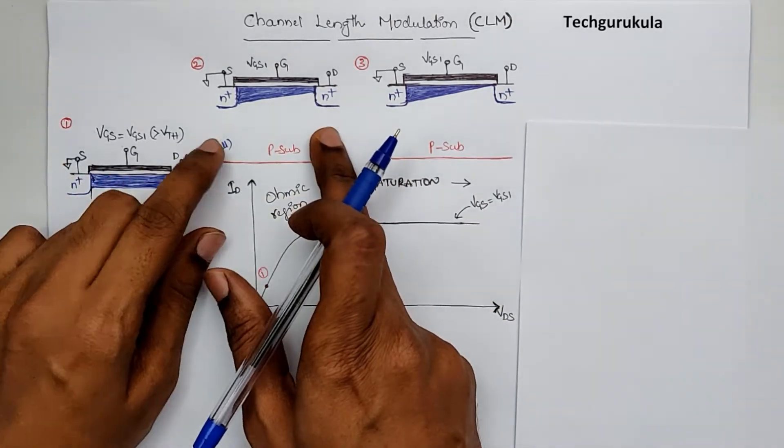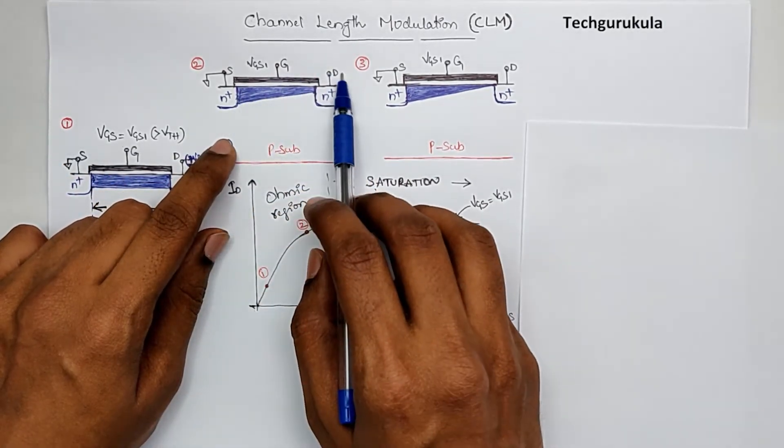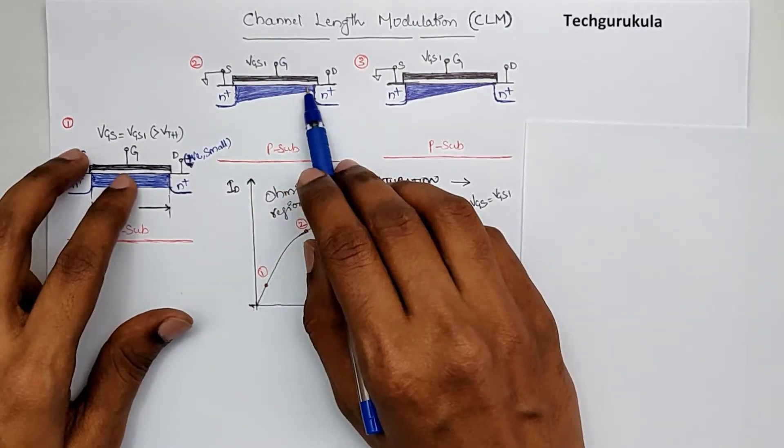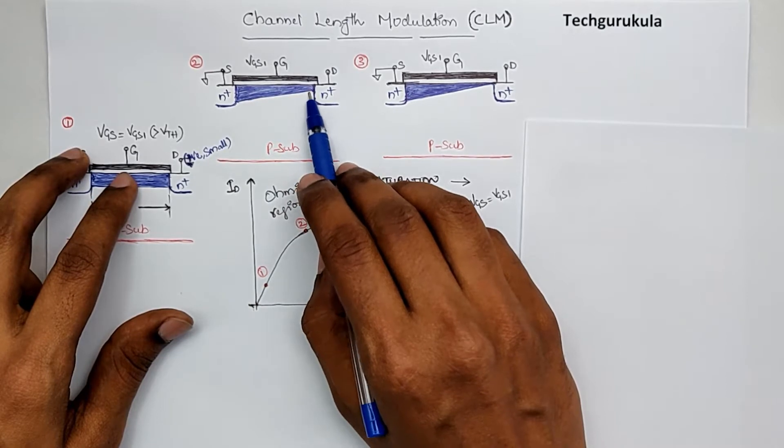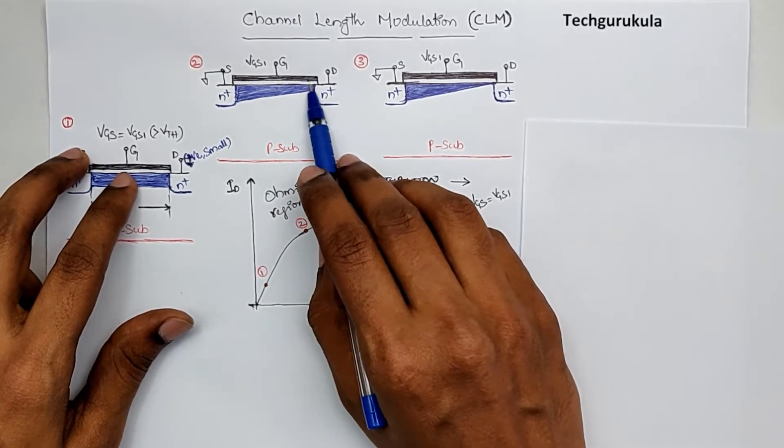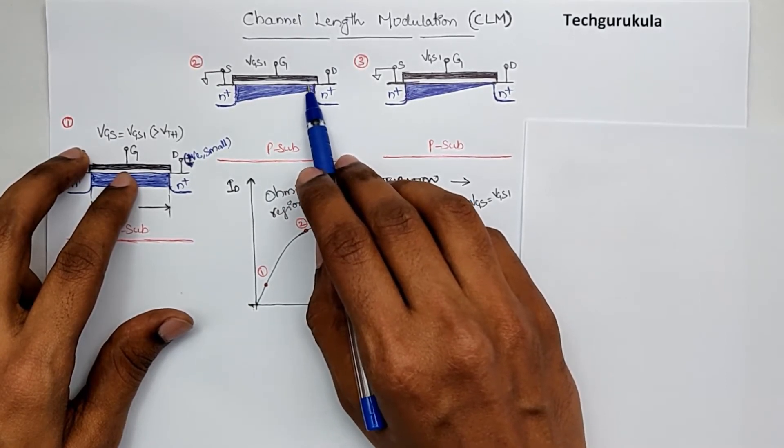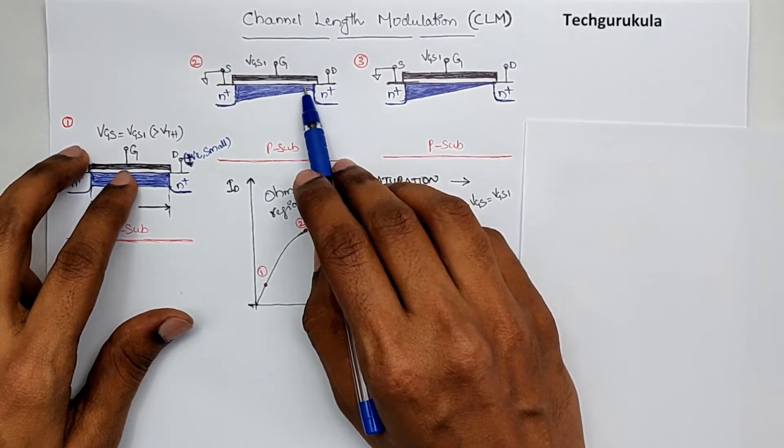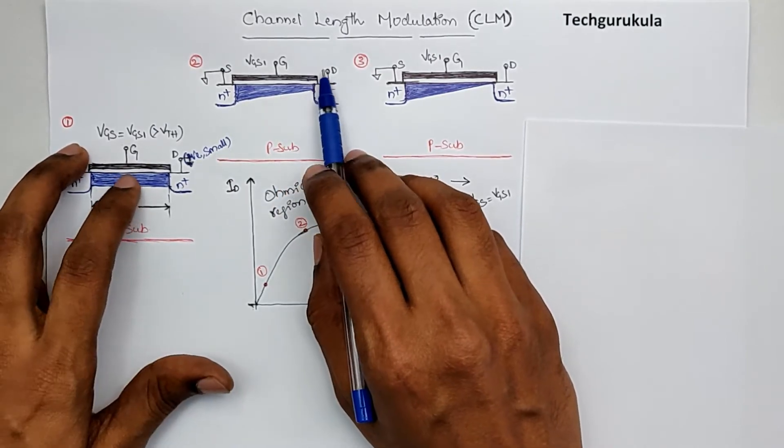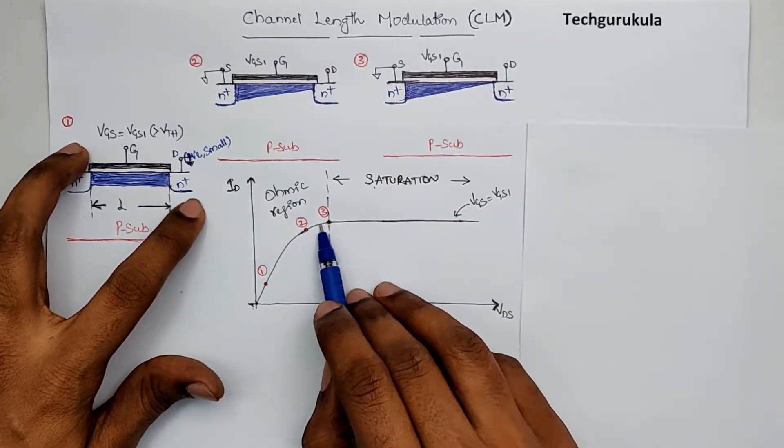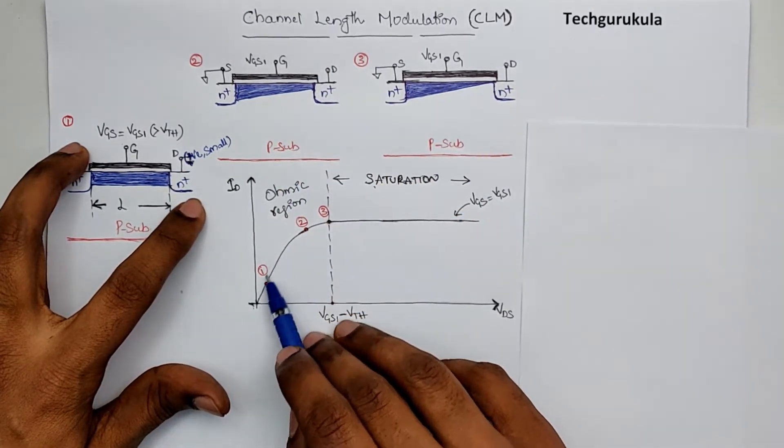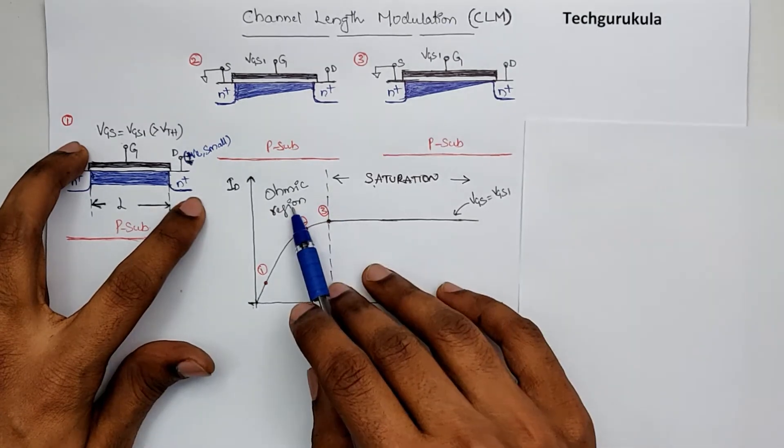Coming to the second situation where VDS was increased, as the potential was higher on the drain side, there was reverse bias and depletion region increased and the channel thickness reduced, or the concentration of electrons in the channel reduced. Due to which the resistance increased and of course potential increased, hence we had current increasing at a rate which is less compared to this region.